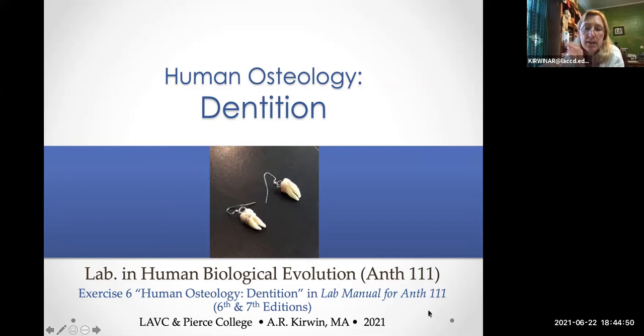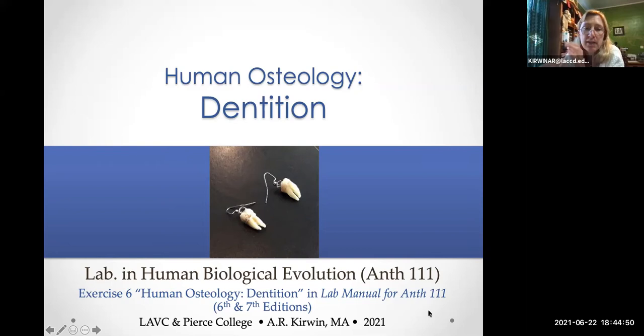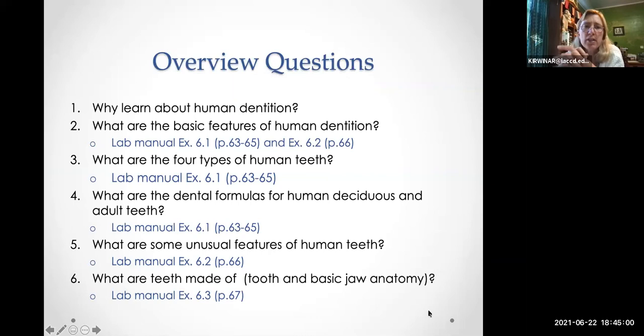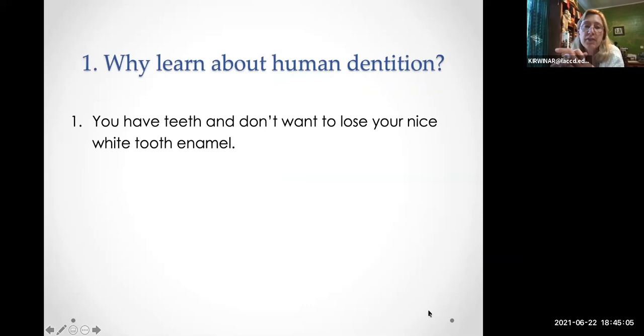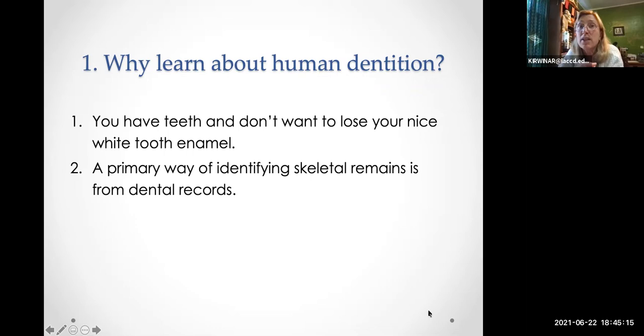Those are earrings made out of someone's old teeth — kind of gross! Overview question one: why learn about human dentition? Number one, you have teeth and you don't want to lose your nice white tooth enamel. Number two, a primary way of identifying skeletal remains is from dental records, so teeth are really important.